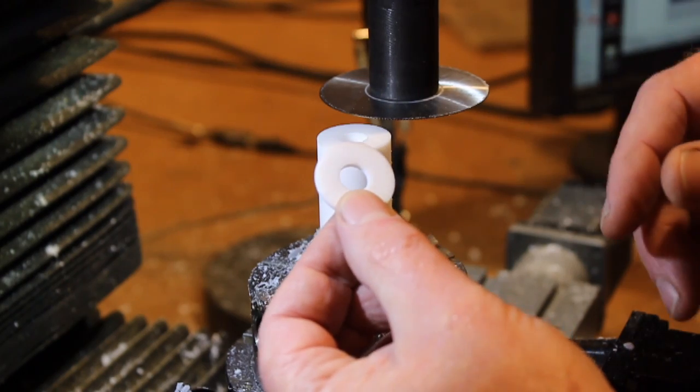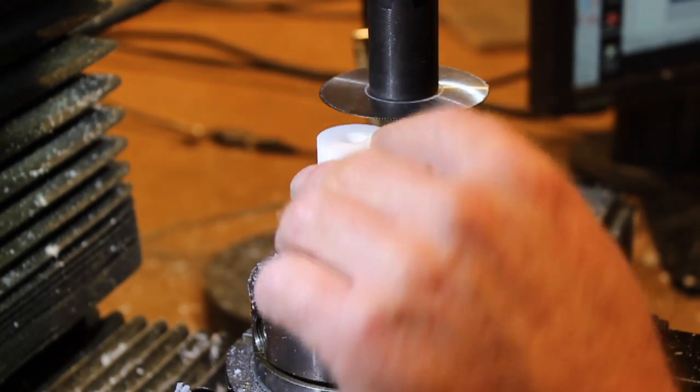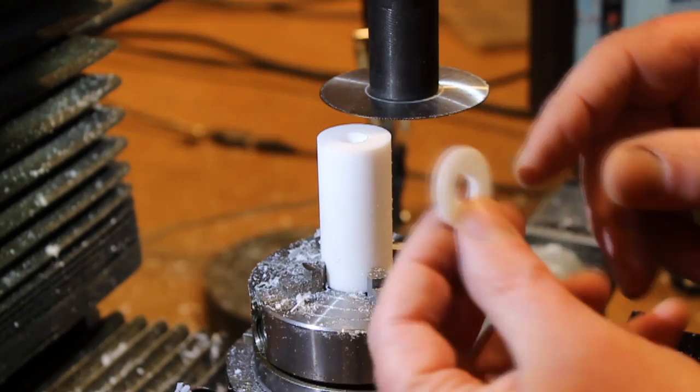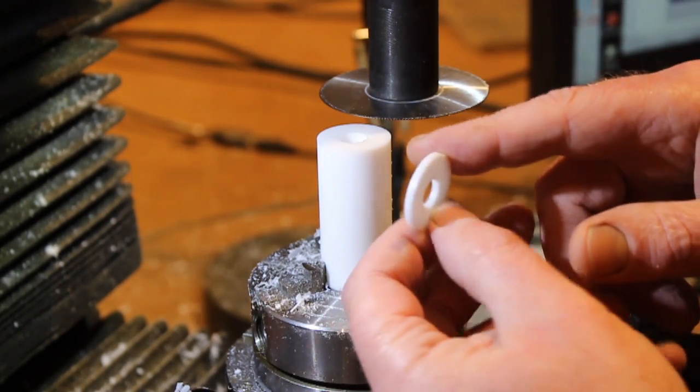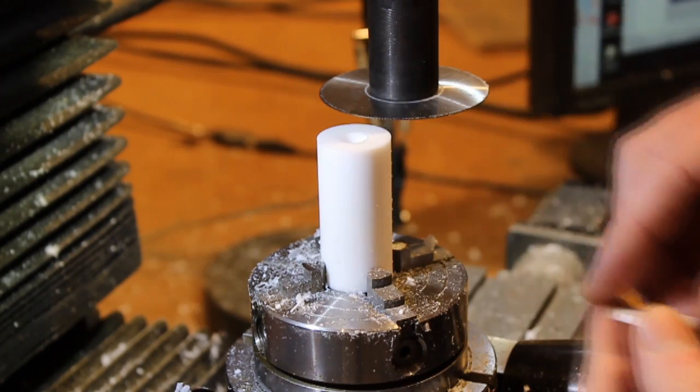PTFE is polytetrafluoroethylene, and you probably know it as Teflon. Obviously Teflon is very low friction, so by making the washers out of Teflon, we have a nice smooth surface for the gears to turn on.